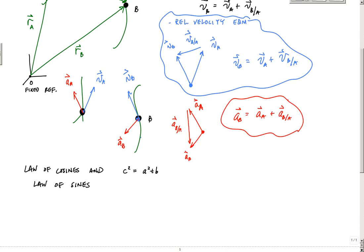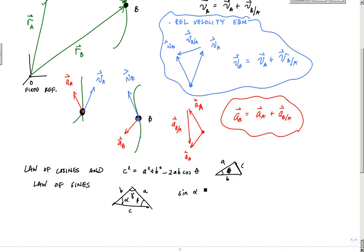The law of cosines is: c squared equals a squared plus b squared minus 2ab cosine of theta, where theta is the angle between vectors a and b. So that triangle would have sides a, b, c and angle theta, and that lets you find the magnitude of c. The law of sines is: a over sine alpha equals b over sine beta equals c over sine gamma. So finally, a practical application of law of sines and law of cosines — it all comes screaming back eventually.